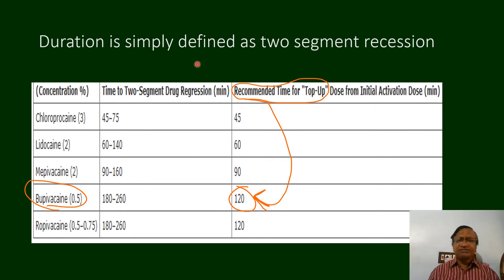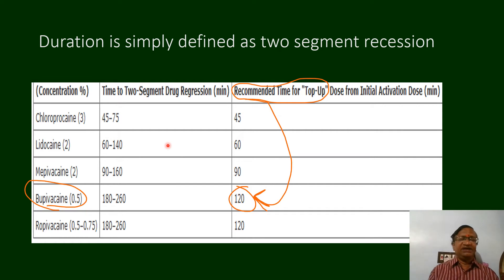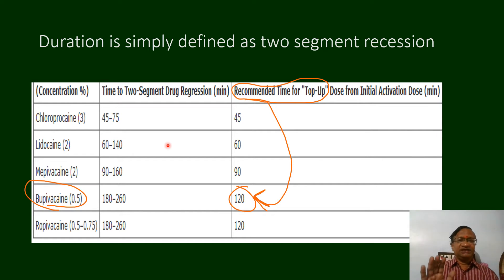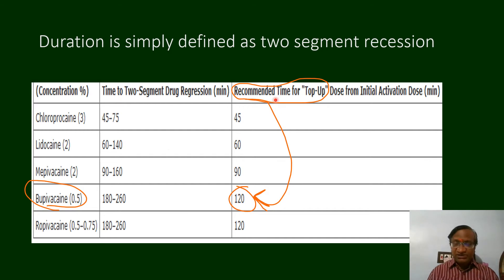Duration is simply defined as two-segment dermatomal recession. If you have achieved a level of T4 and after two and a half hours it has receded to T6, that is what is called the duration. In simple terms, you need to give a top-up before that two-segment recession occurs — this is what is important.